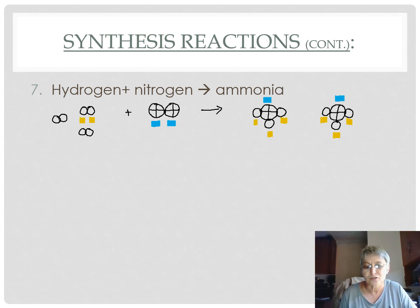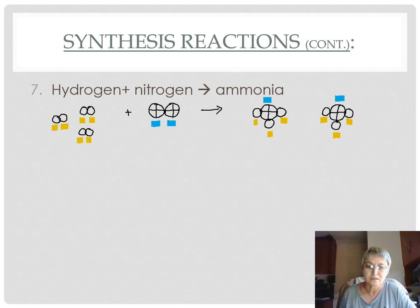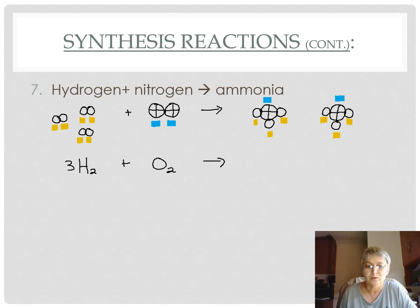That's not difficult to sort out: I need another two molecules to have six hydrogen atoms. Remember, two hydrogen atoms make one hydrogen molecule. Now I've got six hydrogen atoms on each side of the equation. In terms of the balanced equation, hydrogen is diatomic so there must be three hydrogen molecules, and there are two ammonia molecules. Ammonia is NH₃.